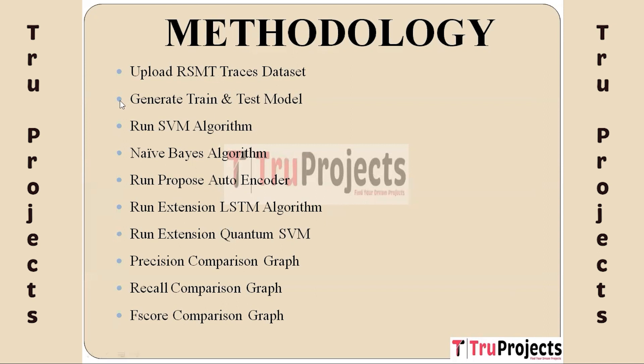The second module is generate train and test model. In this module, the raw RSMT traces are transformed into deep learning features using an auto-encoder technique. The dataset is then divided into training and testing subsets, with 80% for training and 20% for testing.